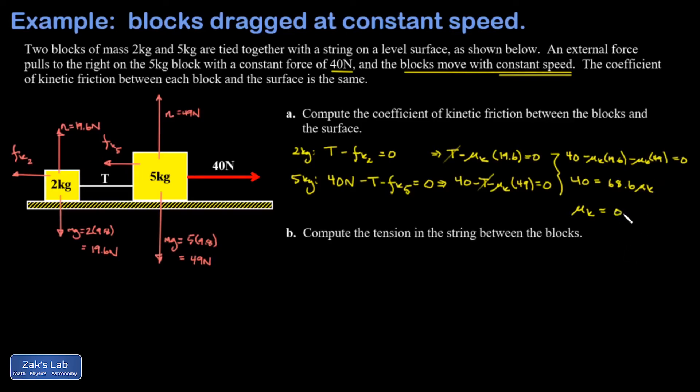In part b we're asked to get the tension in the string between the blocks. In terms of the algebra we could go back to either one of these equations that related T and mu_k, and we'll plug in the mu_k that we found and solve for T. But it's simplest to do this for the 2 kilogram block because that one had the least number of forces on it.